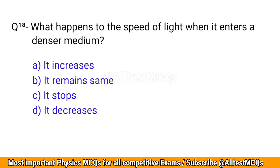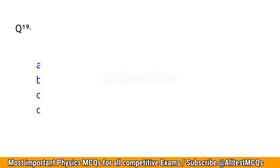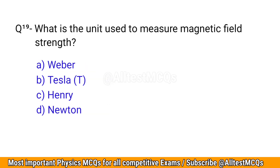Q18. What happens to the speed of light when it enters a denser medium? The correct option is D: It decreases.